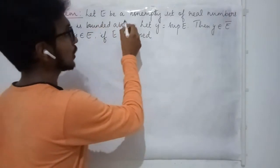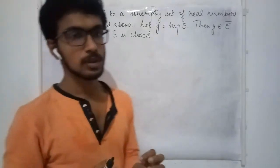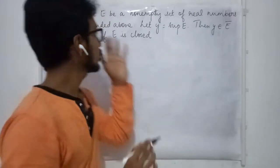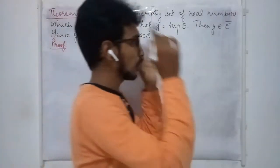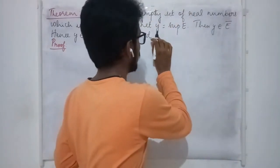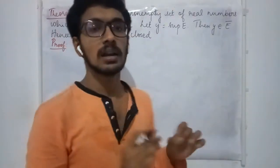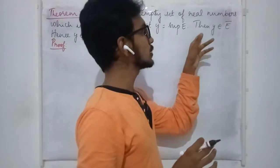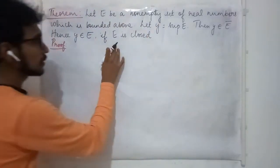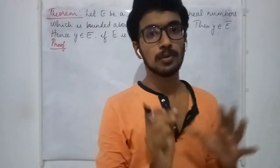The theorem: E is given to be a non-empty set of real numbers which is bounded above. When a set is bounded above, the supremum of the set exists. The supremum is taken to be y, and we will prove that the supremum is a member of the closure of E. Furthermore, when the set is closed, the supremum is a member of the set itself.